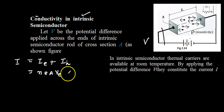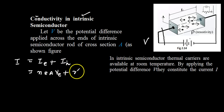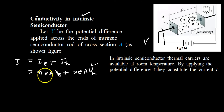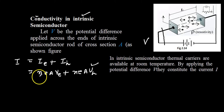Similarly, the hole current IH is written as N·E·A·Vh, where Vh is the drift velocity of the hole. It is our assumption that the number density — meaning the number of carriers per unit volume — of electrons and holes are both the same.